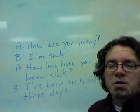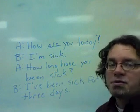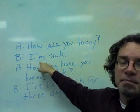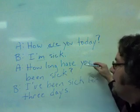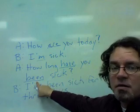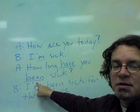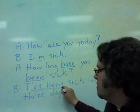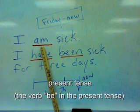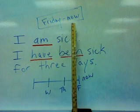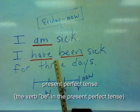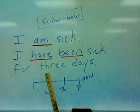In this dialogue, here's the verb 'be.' How are you today? And the answer: I'm sick. Remember how the verb 'be' changes after the subject. And then the person hears you say that and asks: How long have you been sick? Here's the verb 'be' in the present perfect tense. The past participle for 'be' is 'been.' And the answer: I've been sick for three days. Here's the present tense — this is the verb 'be' in the present tense: I am sick. That's now. Today is Friday; I am sick now. Here's the present perfect tense, and this shows the length of time for the sickness. I have been sick for three days.